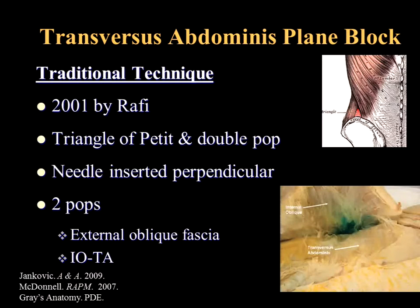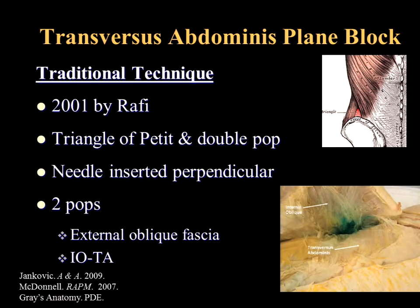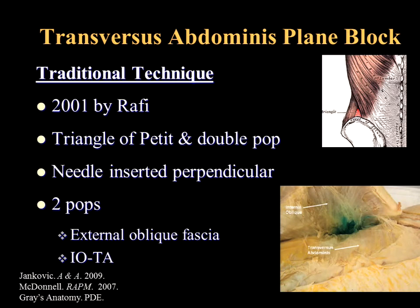The next block is the transversus abdominus plane (TAP) block. There are many landmark-based techniques — you can use the triangle of Petit and the double-pop technique, inserting the needle perpendicularly through the latissimus dorsi, external oblique, and iliac crest boundaries. You can also feel for pops through the external oblique fascia and then through the internal oblique and transverse abdominus plane via palpation.